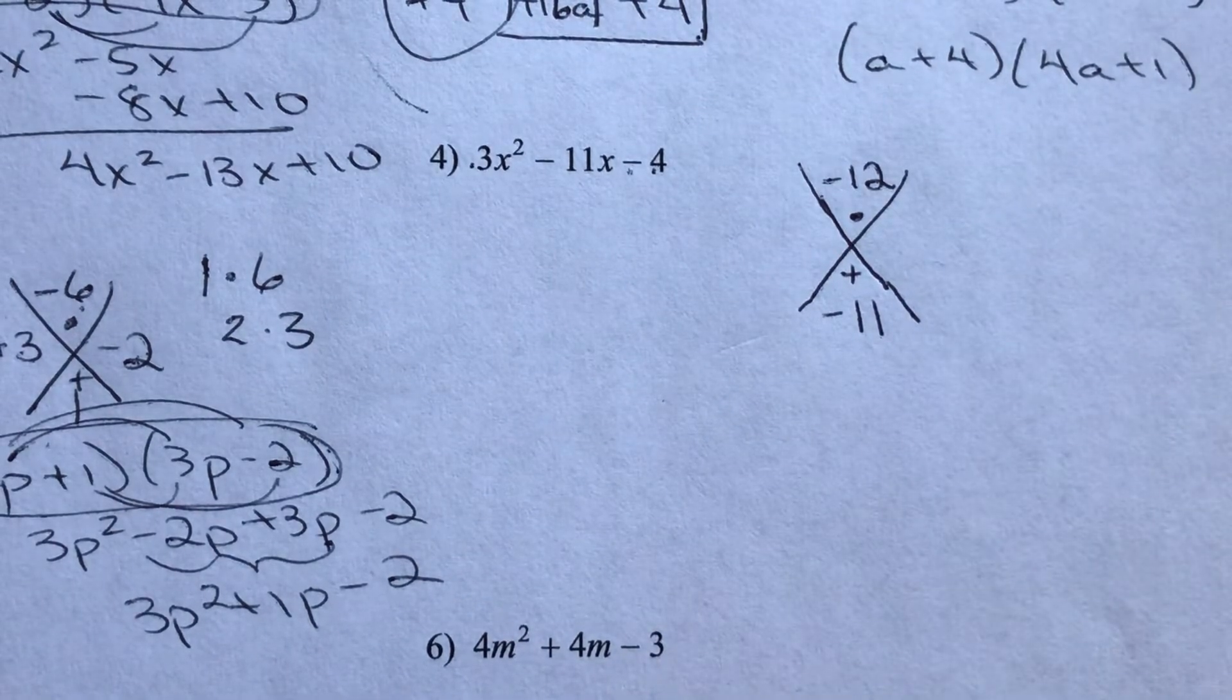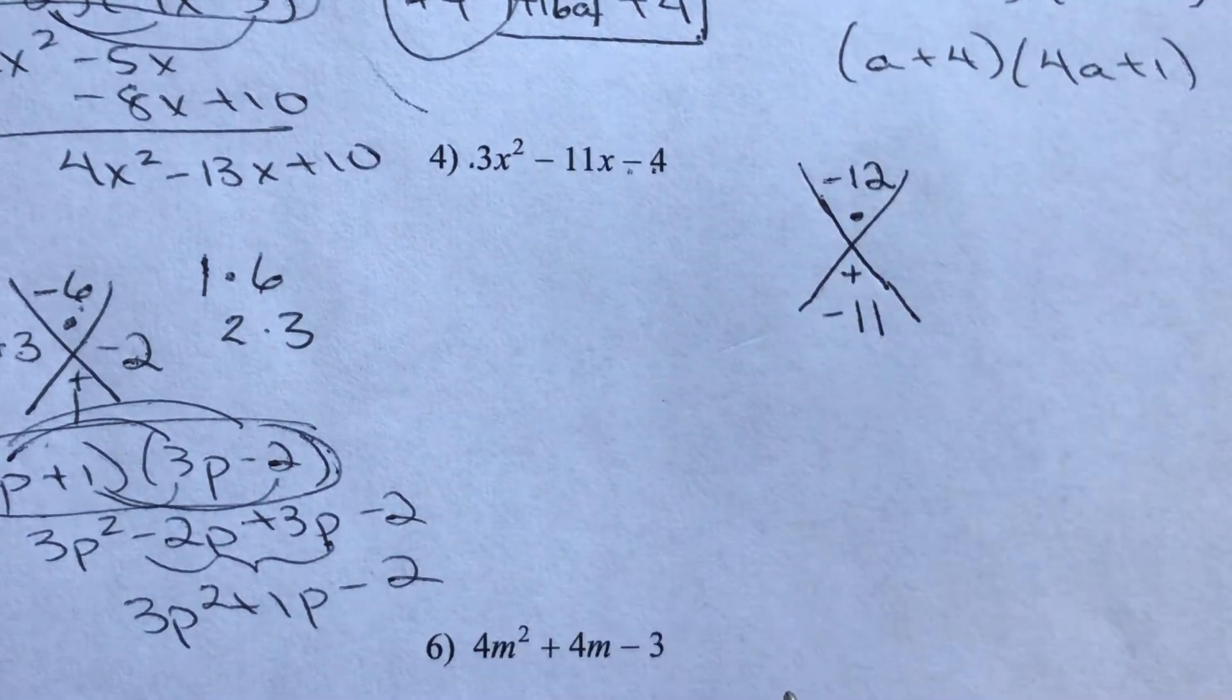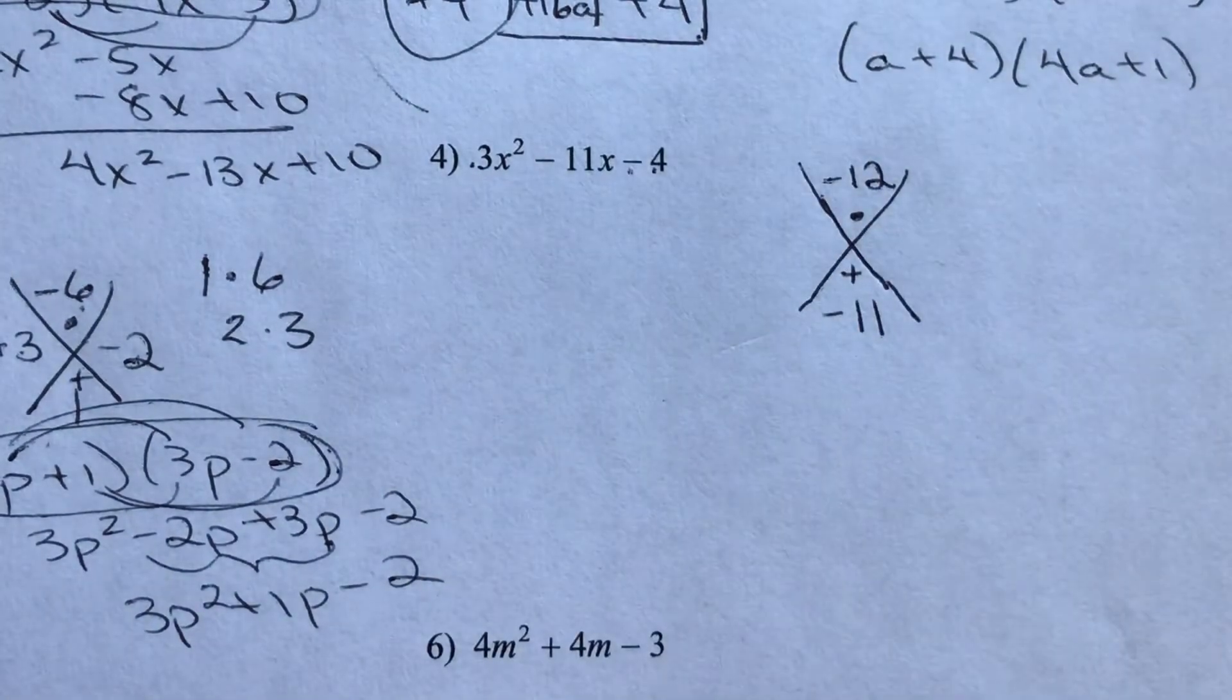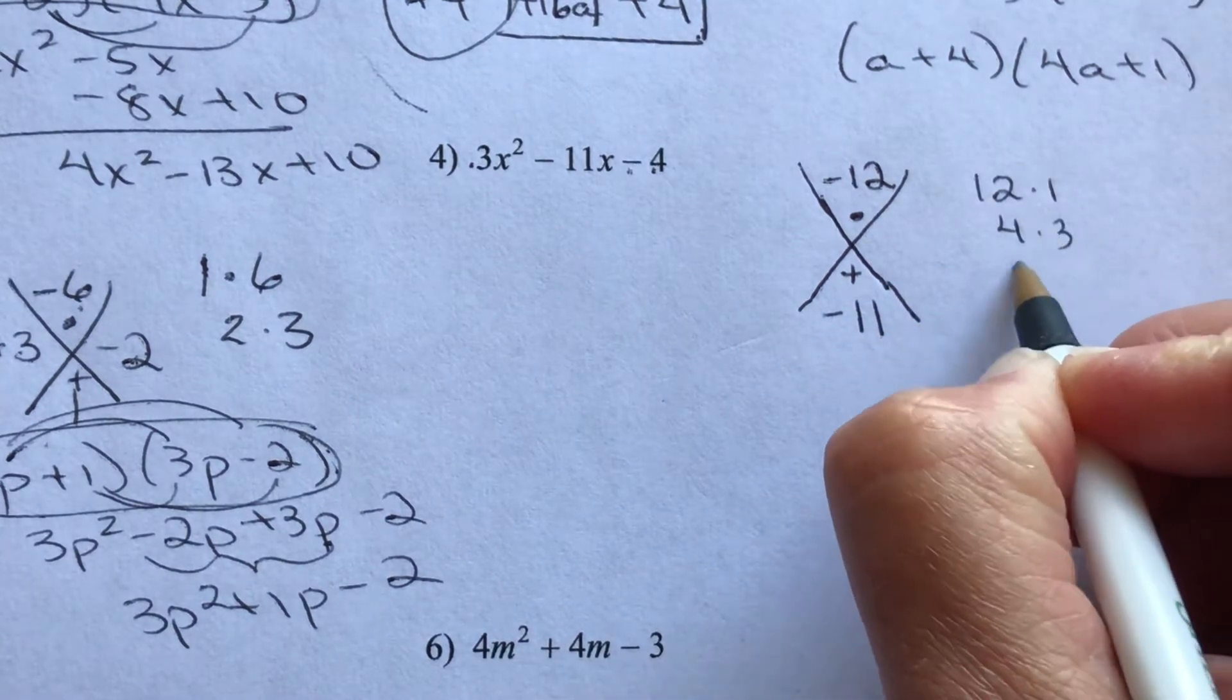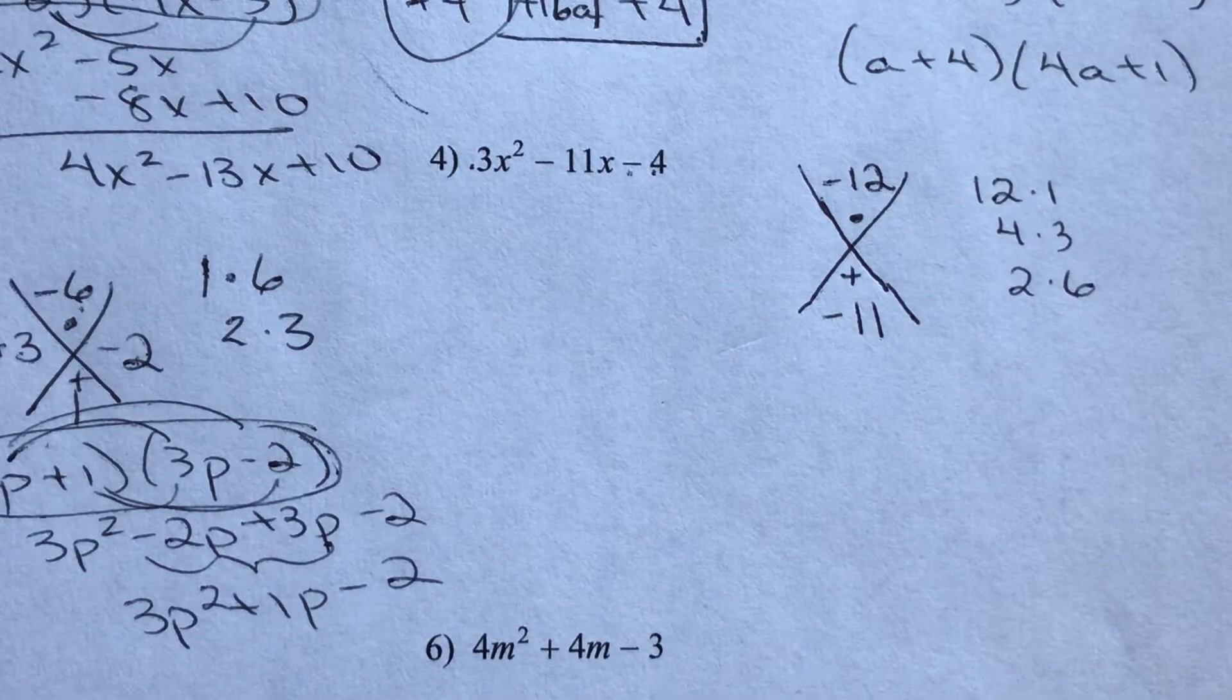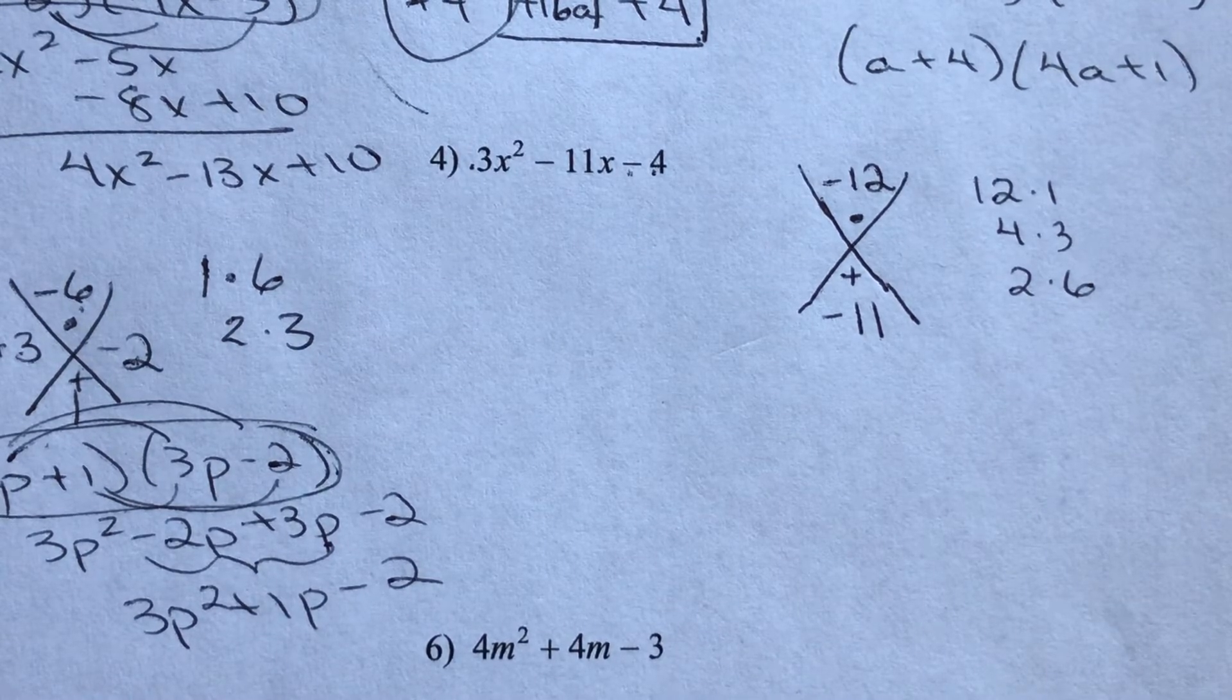So I'm looking for two numbers that multiply to give me negative 12, but subtract to give me negative 11. Well, first of all, let's list our factors of 12. Just three sets of factors. Which one of those would give you some combination of 11?